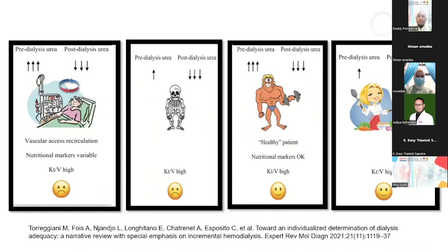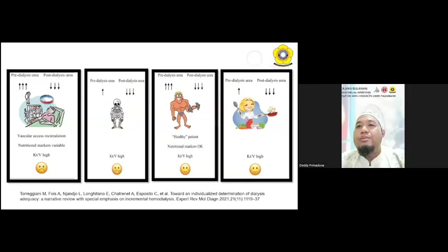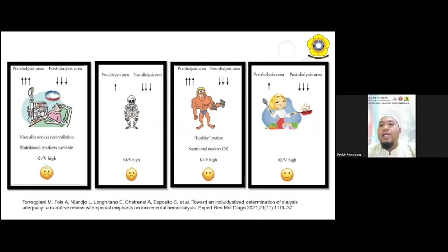Pada gambar yang pertama, kita melakukan hemodialysis dengan tujuan menarik ureum sebanyak-banyaknya dengan harapan terjadi penurunan ureum yang serendah-rendahnya. Tetapi pada gambar ini kita lihat bahwa pasien malah lebih banyak tinggal di bed, kemudian kondisinya tidak baik. Pada gambar yang kedua, di mana kita menarik ureum pada pasien sebanyak mungkin, hasil akhirnya pasien kurus dan semakin terjadi malnutrisi.